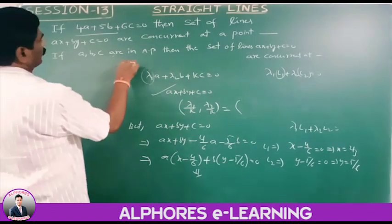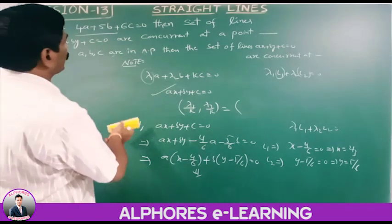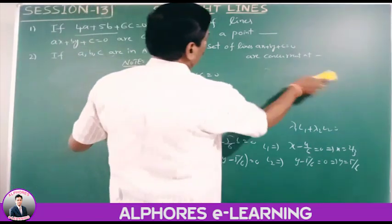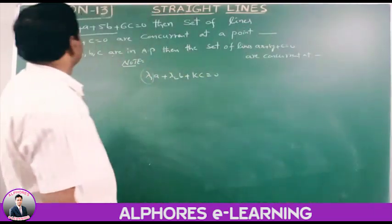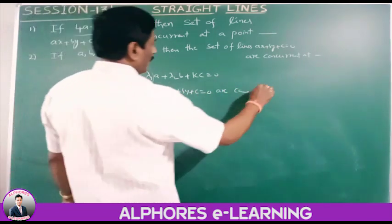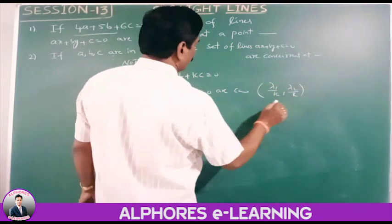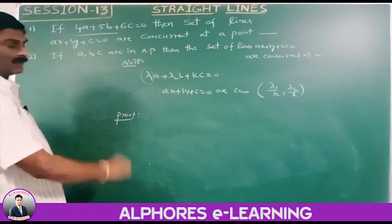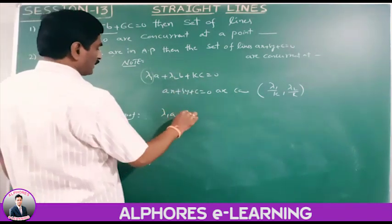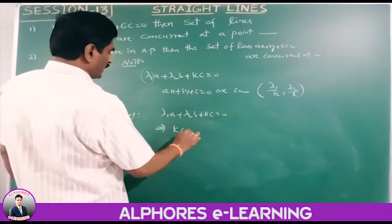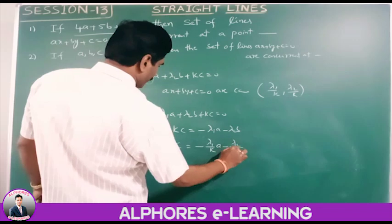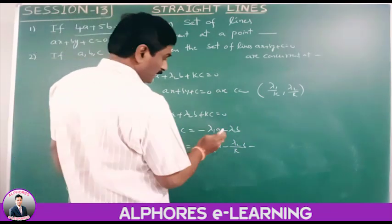Note point: if lambda-1·a plus lambda-2·b plus k·c equals 0, then the set of lines ax plus by plus c equals 0 are concurrent at the point (lambda-1/k, lambda-2/k). Proof: from the relation, kc equals minus lambda-1·a minus lambda-2·b, so c equals minus(lambda-1/k)·a minus (lambda-2/k)·b.